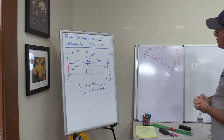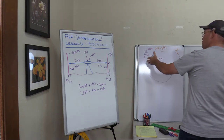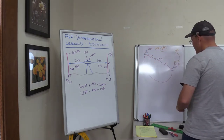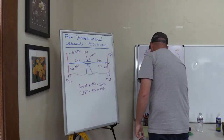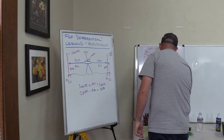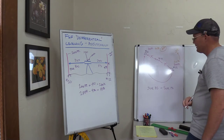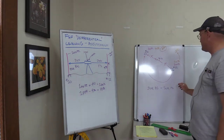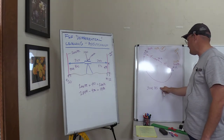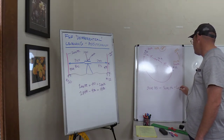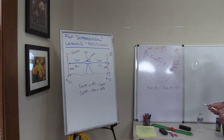That's one way to calculate your closure error. Another way — this doesn't work if you have a level run, but if you have a closed level loop — if you add up all your backsights, the sum of your backsight rod readings should equal the sum of your foresight readings. So if you add those two numbers up and subtract one from the other and they're not equal, that's going to give you your closure error. If you subtract the sum of your foresights from the sum of your backsights, that gives you your closure error. We'll probably go through that when I do the video on level notes.